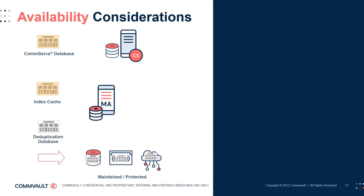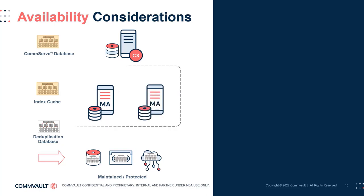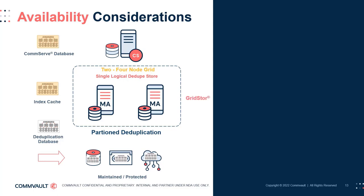To provide a higher level of availability for media agents using deduplication, you should always design with two, three, or four nodes in a grid using partition deduplication. Partition deduplication distributes the DDB across multiple media agent nodes, providing partition failover by automatically redirecting the deduplication process if one partition is temporarily unavailable. Media agents also utilize grid store technology to provide automatic path failover should a media agent or storage target become inaccessible.